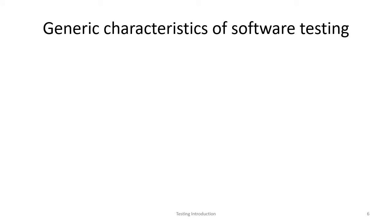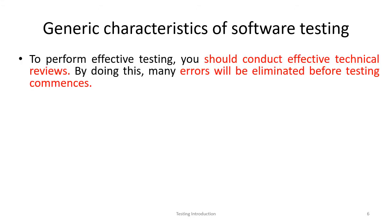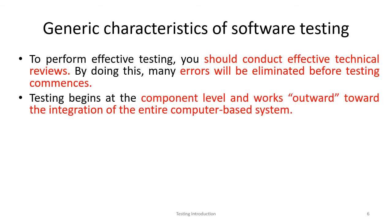What are the general characteristics of good software testing? To perform effective testing, you should conduct effective technical reviews. By doing technical reviews, errors can be eliminated. Every time testing begins at the component level and evolves outward to the integration of the entire computer-based system.